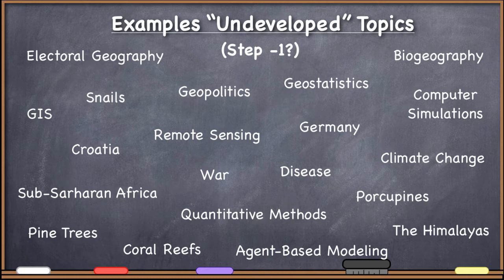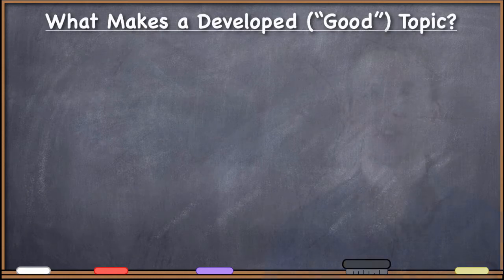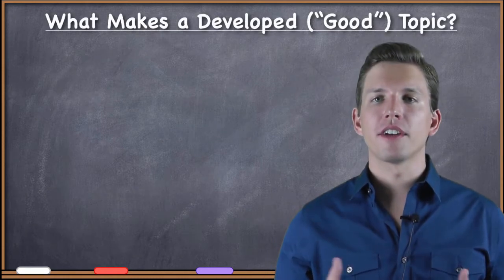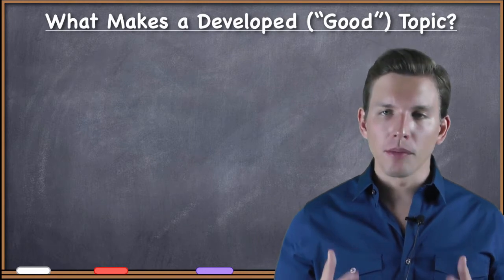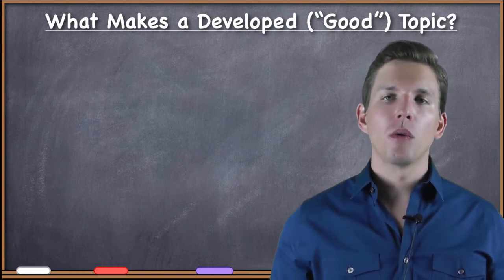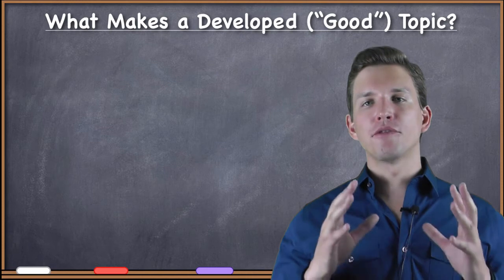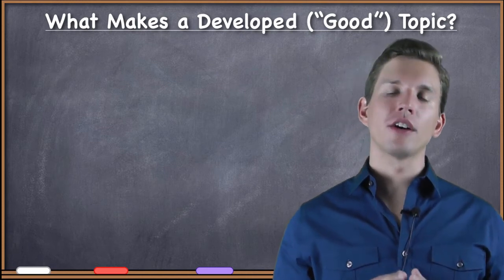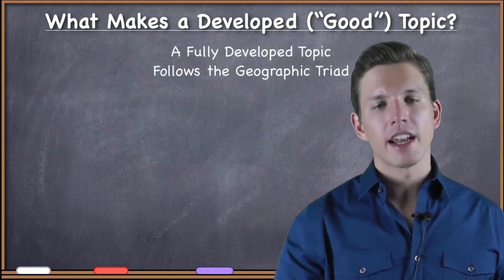There are many fantastic studies that could be done on all of these things, but we've got to go much further in developing this before we can begin a GIS project. What does having a developed topic really mean? I would say that a fully developed topic follows the geographic triad. If you've taken classes from me before and heard my 'what is geography' lecture, you've heard me talk about the geographic triad in some detail.